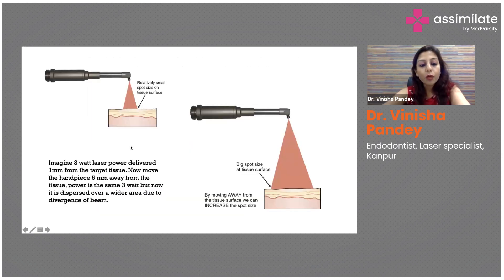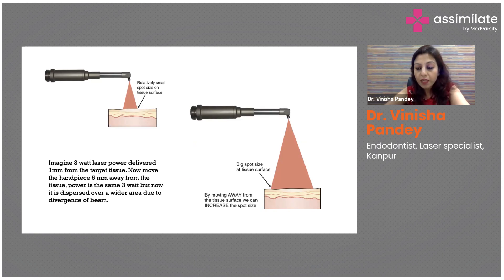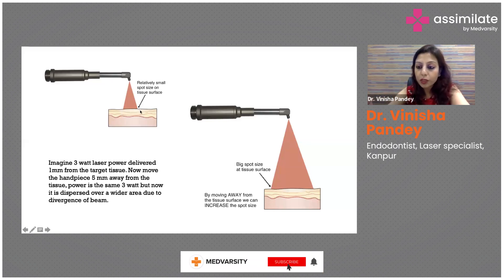For example, imagine 3 watts of laser power delivered 1 mm from the target tissue. If you move the handpiece 5 mm away, the power remains the same but becomes more dispersed — the beam diverges over a wider area, resulting in a bigger spot size at the tissue. Working near the tissue decreases the spot size, while working farther away increases it.